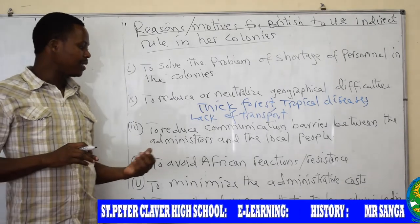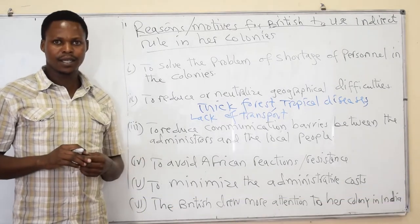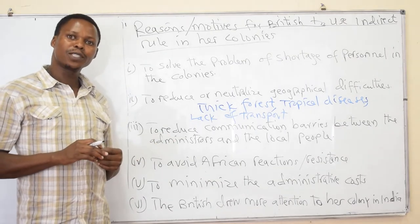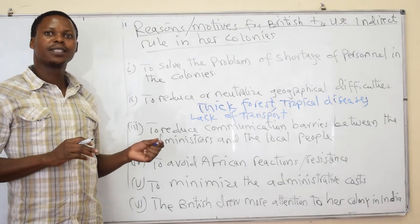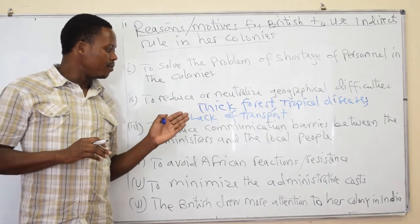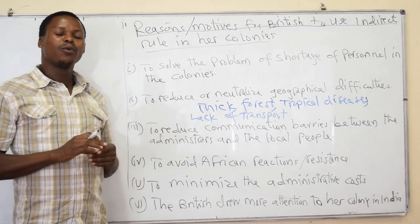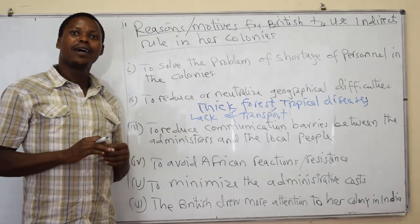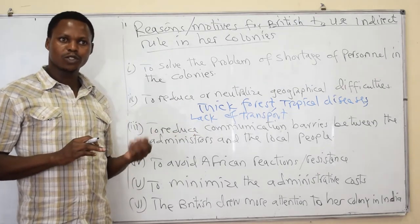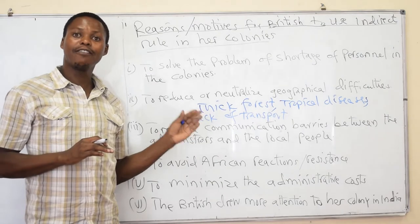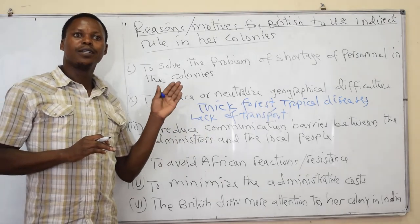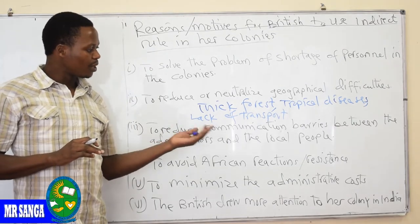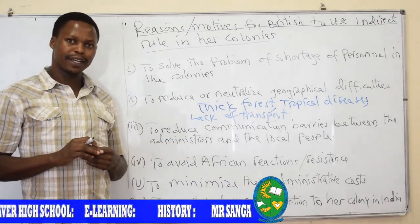Another motive was to minimize administrative costs. The British colonies employed few personnel because they discovered that employing many personnel would incur high expenses to pay them. That's why they decided to use Africans who incurred fewer expenses, making it easier to administer the Africans.